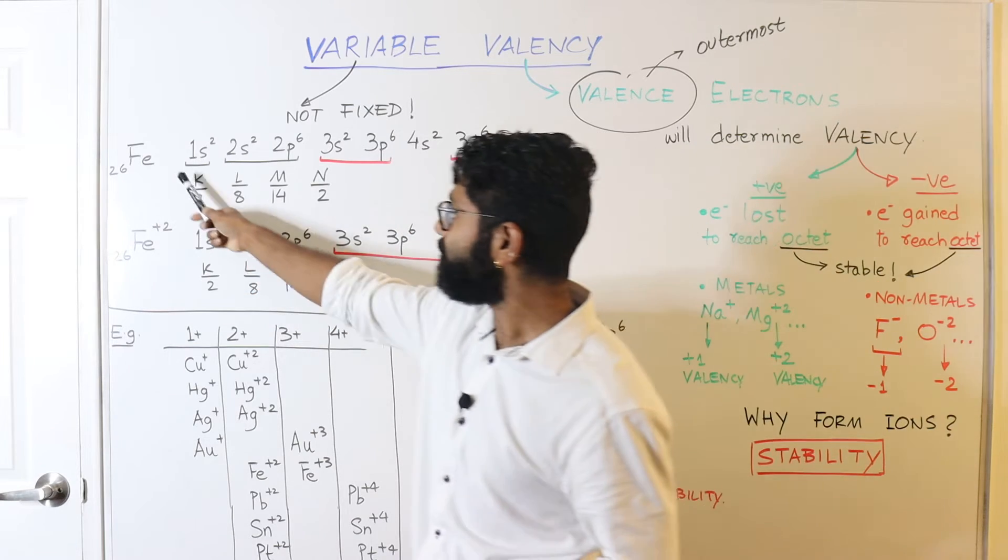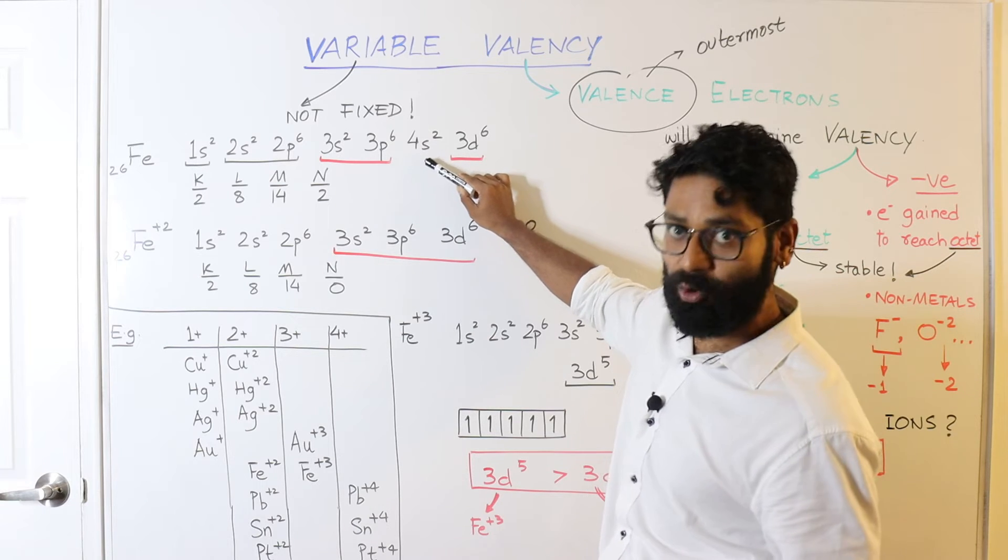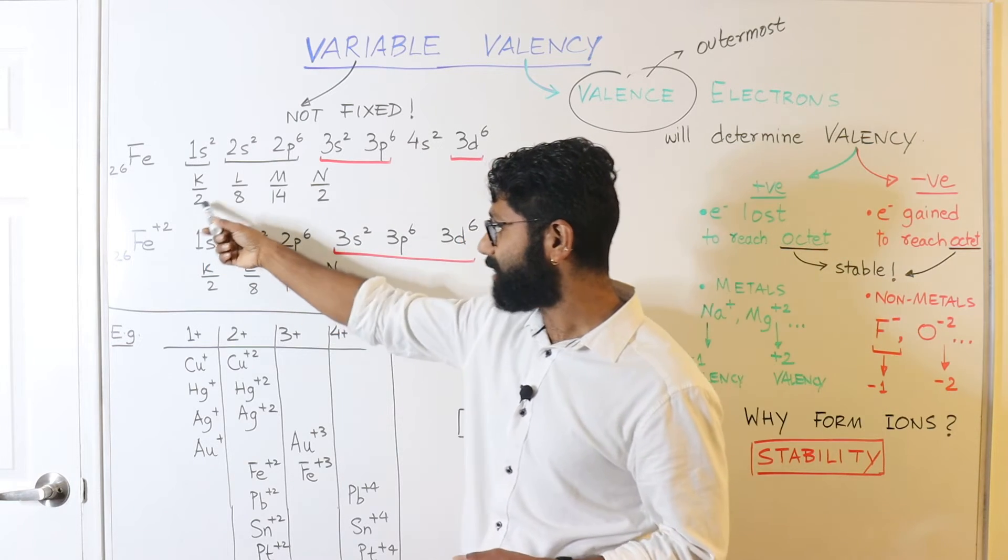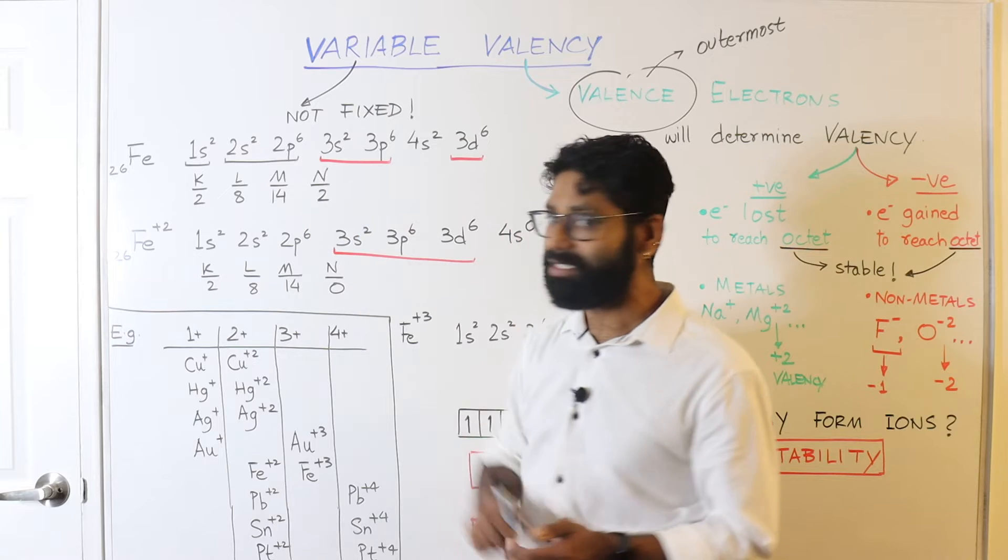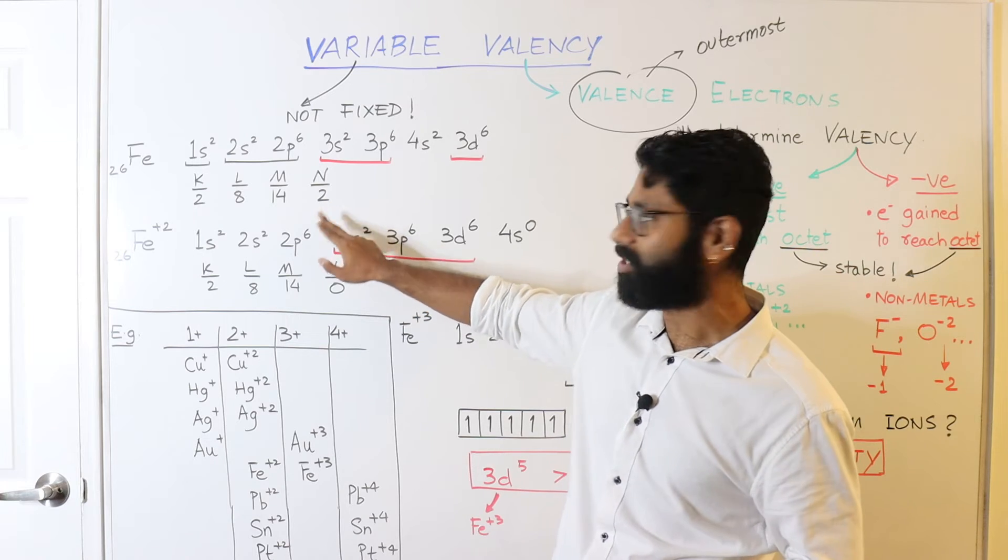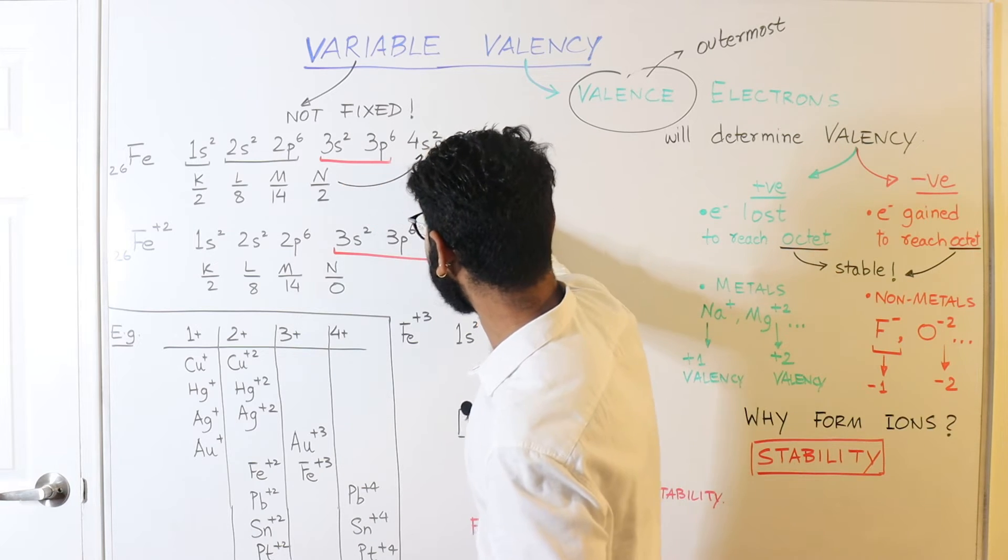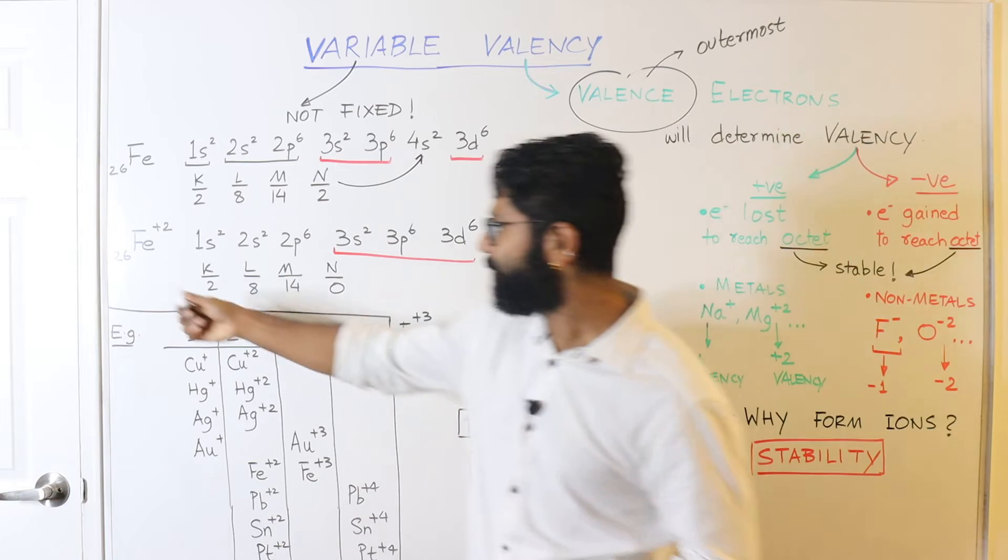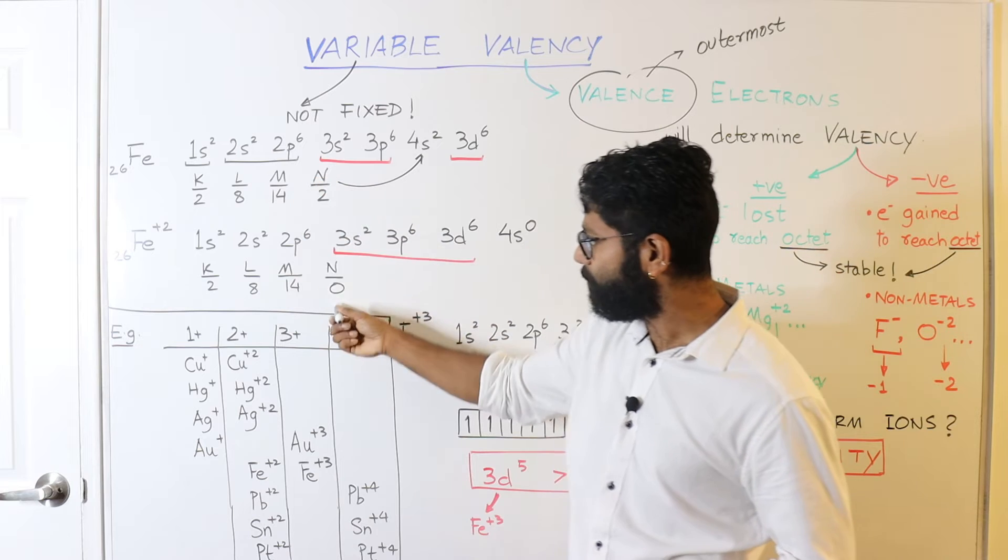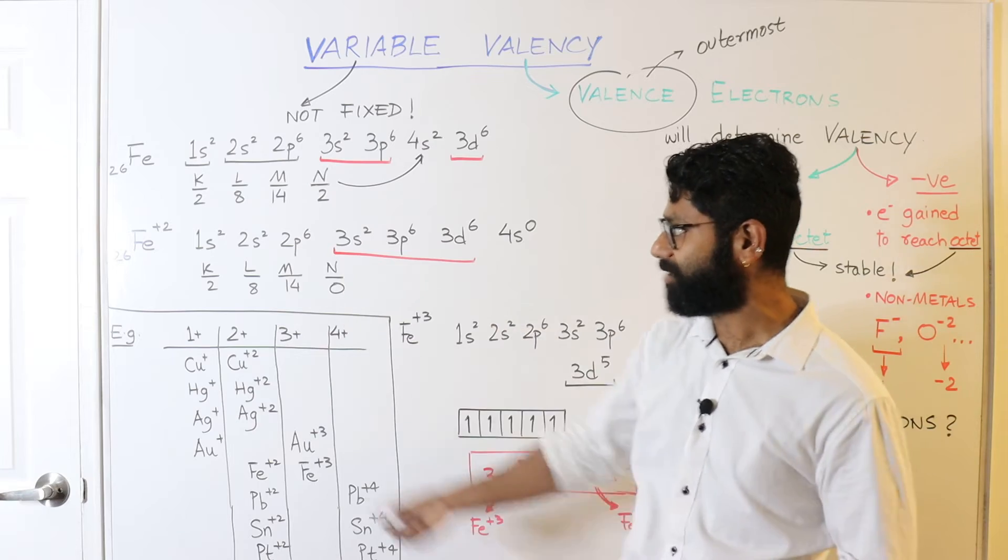When you write the electronic configuration of iron, it is something like this, in which you have two electrons in its 4s and six electrons in its 3d orbital. If we write the Bohr's like the KLM, you see that we have two electrons in its outermost shell. Now, it is obvious that these two electrons can be lost, because it is in the valence shell. Now, these two electrons correspond to the 4s2 orbital electrons. Now if you write Fe2+, everything remains the same except 4s2 becomes 4s0.